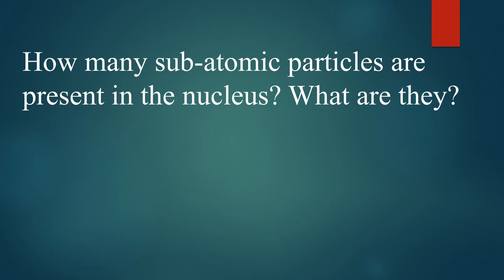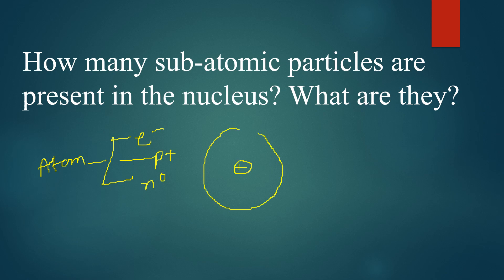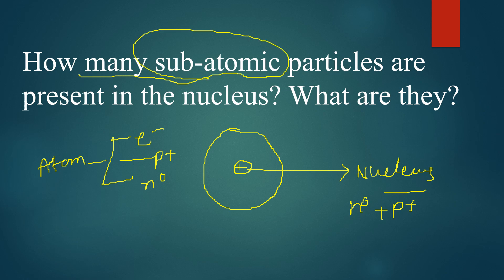The next question: how many subatomic particles are present in the nucleus? You know an atom contains three subatomic particles: electrons, protons, and neutrons. The nucleus is the center of the atom, and it contains neutrons as well as protons. So there are two subatomic particles in the nucleus: neutrons and protons.